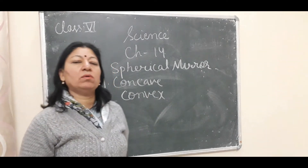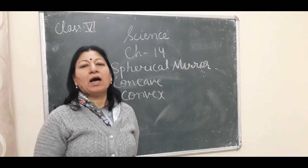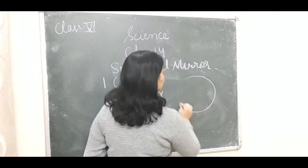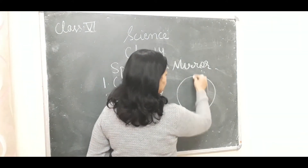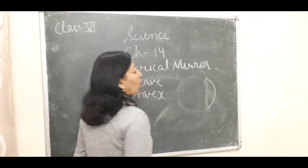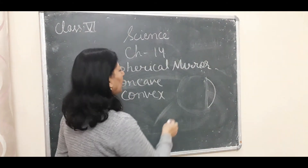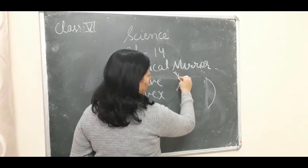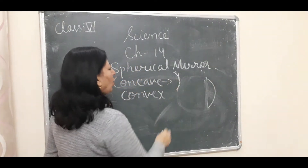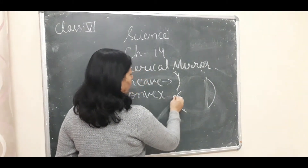A spherical mirror is made from a hollow spherical glass ball. If we cut a portion from it, it becomes a spherical mirror. Whether it is concave or convex depends on which side is polished — if we polish the inner side, it becomes a concave mirror.